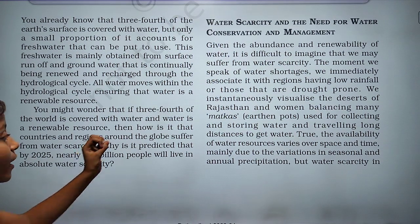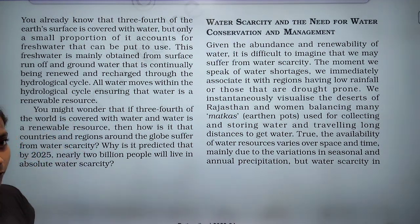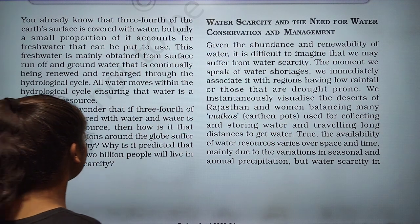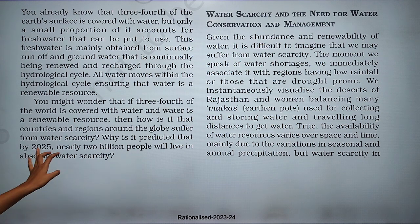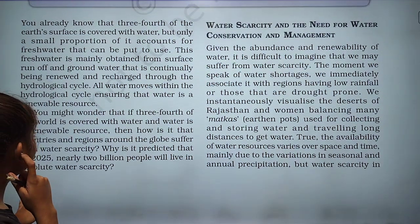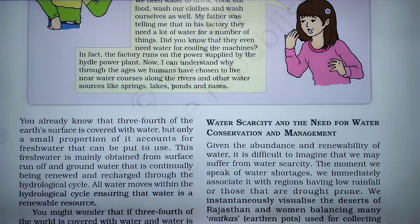Three-fourths of the world is already covered with water and water is also a renewable resource, meaning it can be renewed. So why are many countries still suffering from water scarcity? It is predicted that by 2025, nearly 2 billion people will live in absolute water scarcity.